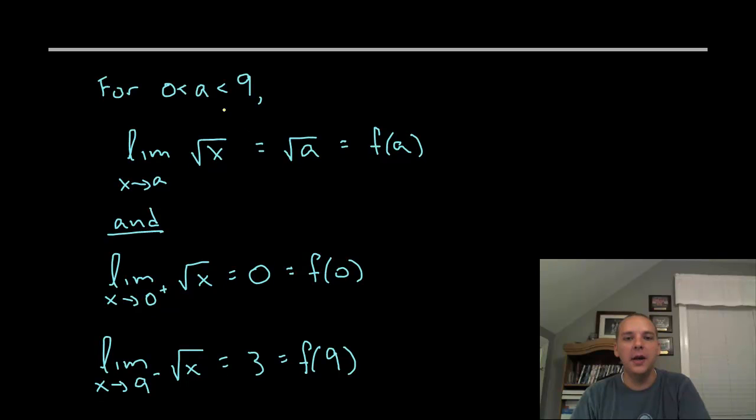So for any value I call it a, between 0 and 9 non-inclusive, on the inside of a where you have points to the left of a and the right of a—even if a is .001, you could find something a little to the left of that and a little to the right of that—then it suffices to say just by the properties of limits that the limit as x approaches a anywhere between 0 and 9 for the square root function would be the square root of a. That's perfectly clear. And that matches f(a). Like if you just wanted to take a and stick it in square root of x, you would get square root of a. That's very clear.